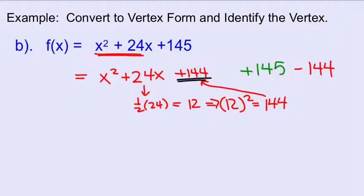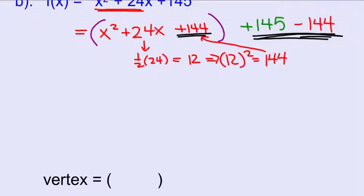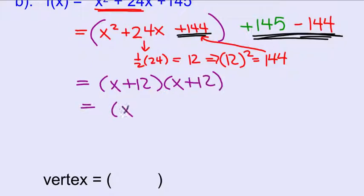Notice again, if we're going to add 144, we have to subtract 144 to balance out that equation, to go back to its original. Now we're going to factor here and then just add these together. So one of the factors of 144 that add to 24, it's x plus 12, all squared. And then 145 minus 144 is plus 1.